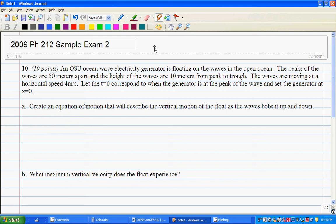The peaks of the waves are 50 meters apart and the height of the waves are 10 meters from peak to trough. The waves are moving at a horizontal speed of 4 meters per second. Let t equals 0 correspond to when the generator is at the peak of the wave and set the generator at x equals 0. So if I were given a problem like this, I know that this was a traveling wave equation type problem.